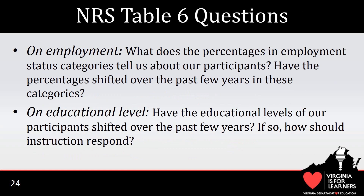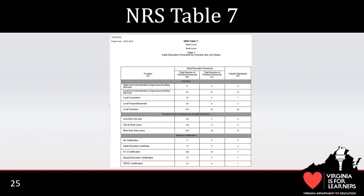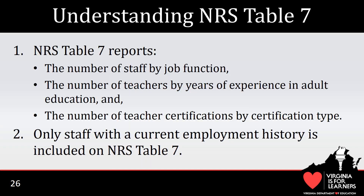Here are some questions for you to consider about NRS Table 6. This slide contains state-level data for NRS Table 7, which reports information about adult education staff throughout the state. NRS Table 7 reports three items: one, the number of staff based on job function, such as teacher, counselor, local administrator, etc.